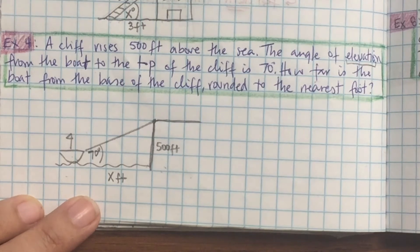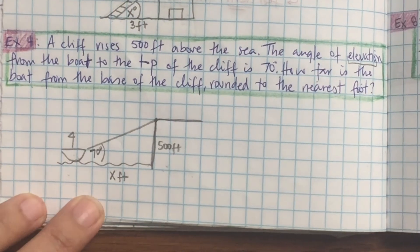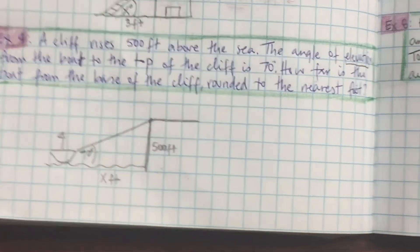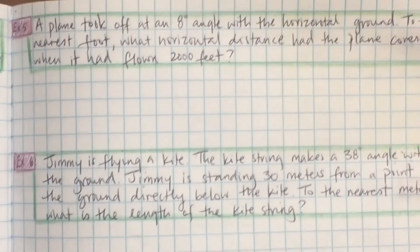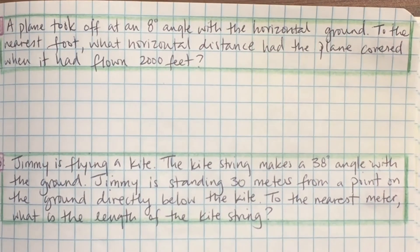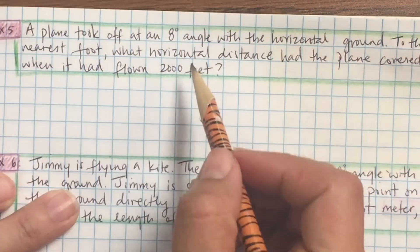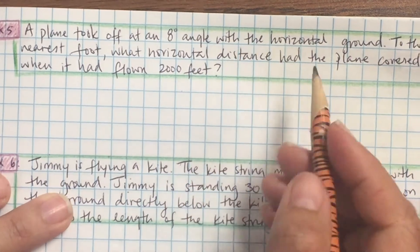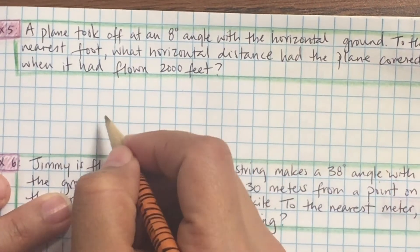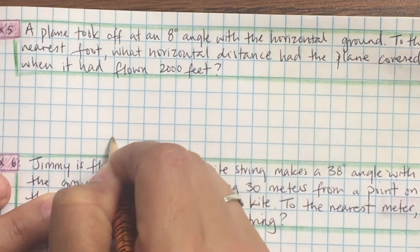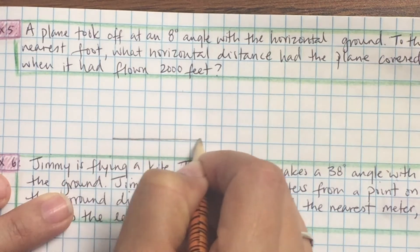To answer any trig question you're going to need two pieces of information and one unknown, and it must be a 90 degree triangle. This whole unit is called right triangles. A plane took off at an 8 degree angle, so I need to draw a plane with a little airport and a horizontal line.